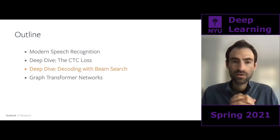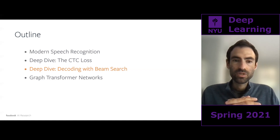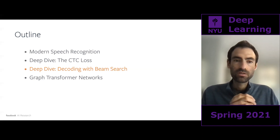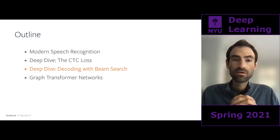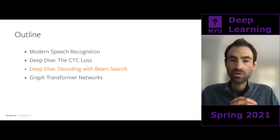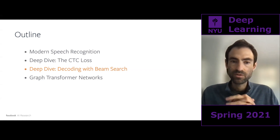To recap: we've covered modern speech recognition, how it's gone from complex hand-engineered pipelines to end-to-end systems. We talked about the CTC loss, one of the more commonly used loss functions for training these end-to-end speech systems. Now that we have trained models and know how to compute the conditional probability of a transcription given input audio, we'd like to find the best transcription for new input audio. That's what decoding with beam search will do.